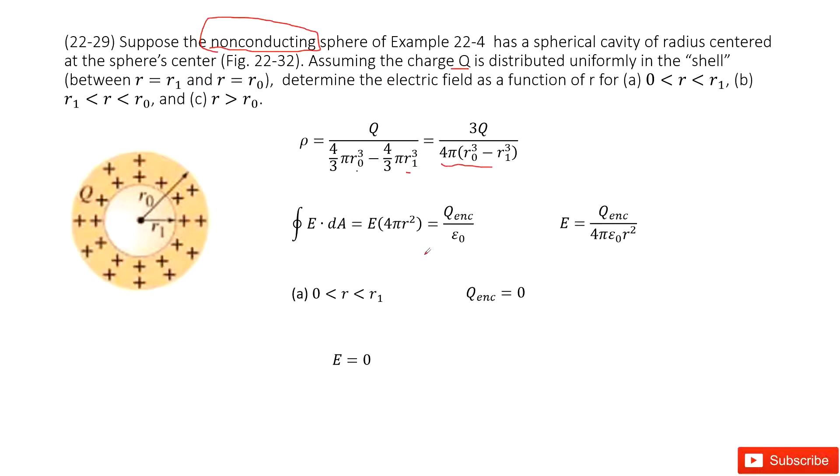Now, if we want to find the answer for the electric field when R is smaller than R₁, if we draw a Gaussian surface, it looks like this one. We can apply Gauss's law.